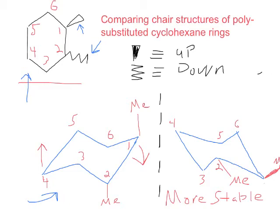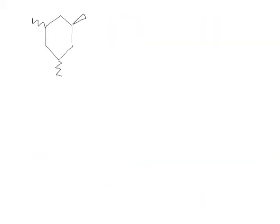With that in mind, let's go ahead and try another one. In this next structure, we have not only a disubstituted cyclohexane ring, but a trisubstituted cyclohexane ring. This is 1,3,5-trimethylcyclohexane. Let's do the exact same thing we did in the previous example, but for this trisubstituted species.